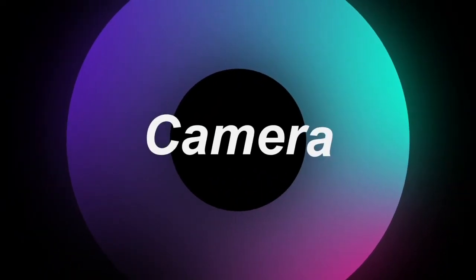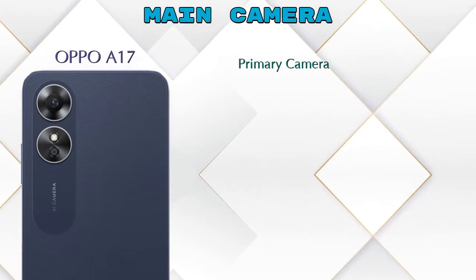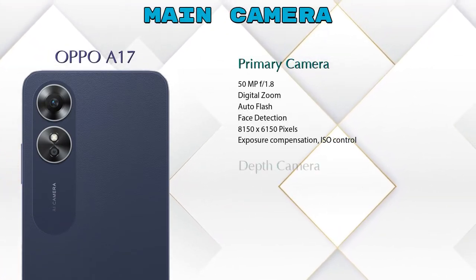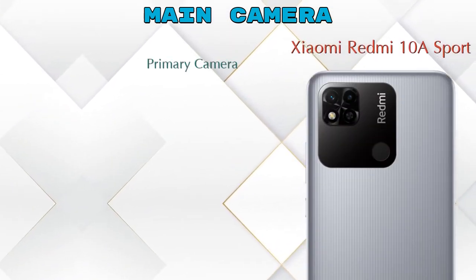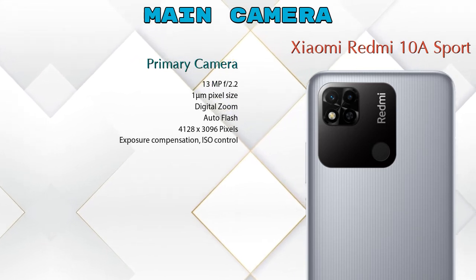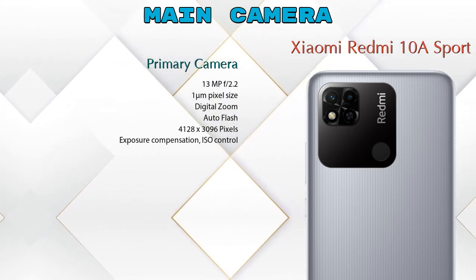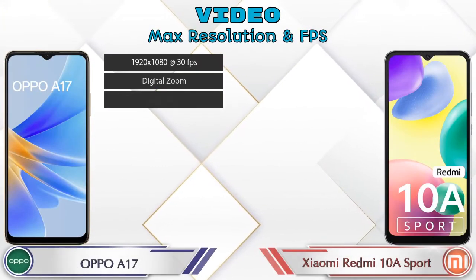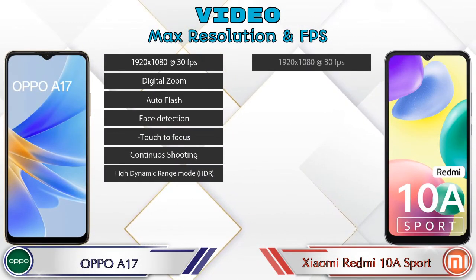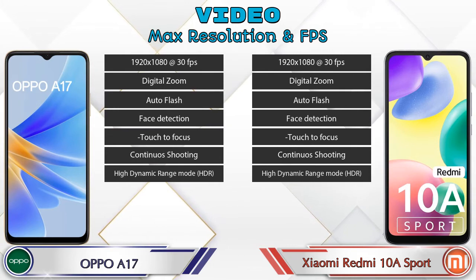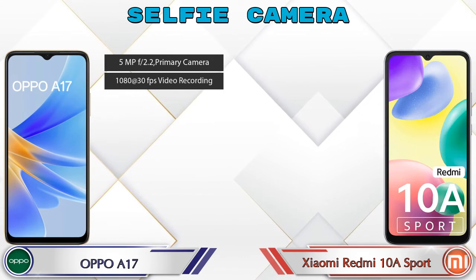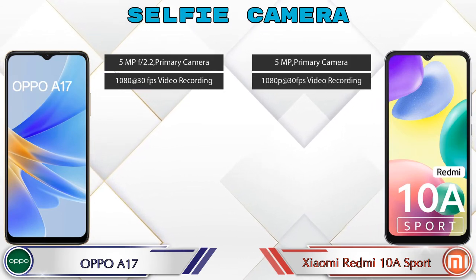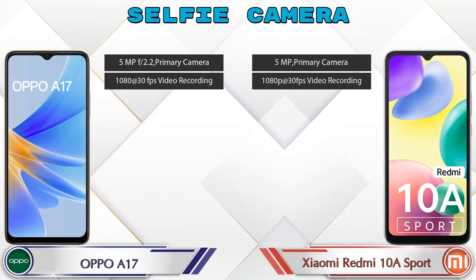Now let's look at our favorite feature: cameras. For the rear camera, the A17 has two cameras — a primary camera and a depth camera — while the Redmi Note 10S has one primary camera. For video, both phones offer seven different types of features. For the front selfie camera, both phones have a single camera with two different features available.